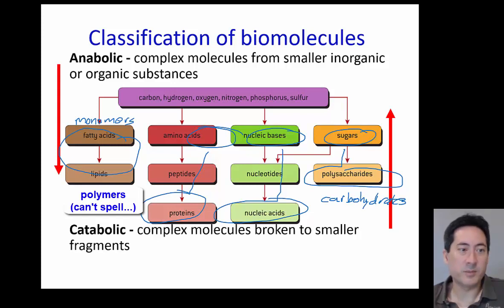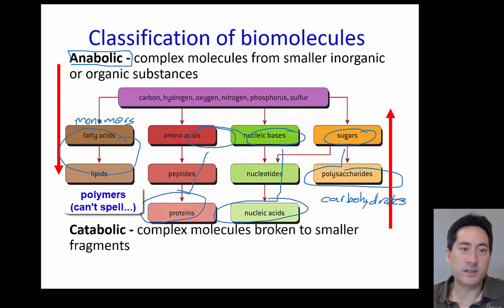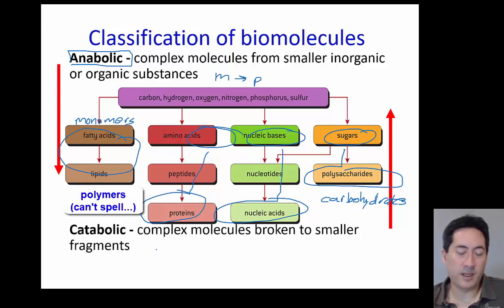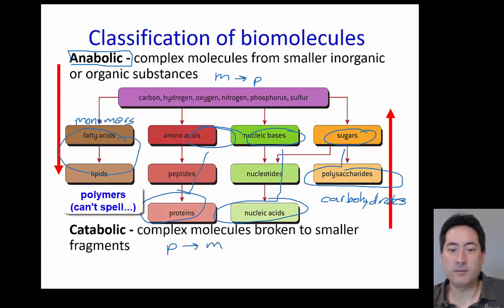Anabolic — I just think of anabolic steroids — so that one's the building up, going from the monomer to the polymer. And catabolic would just be the opposite: if anabolic is building up, catabolic is breaking down, going from the polymers to the monomers. That's how I remember that one.